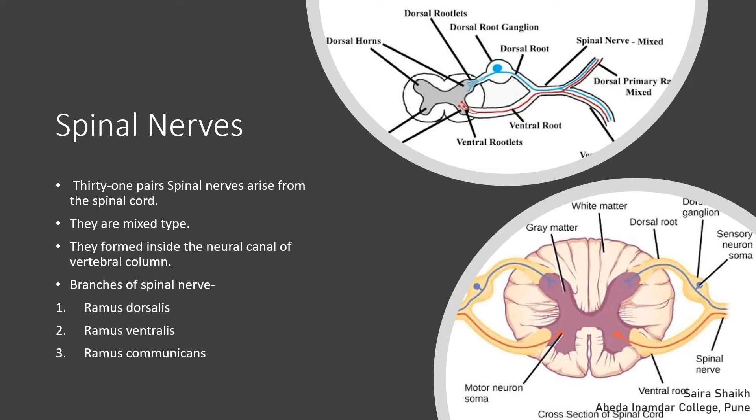Ramus dorsalis innervates the dorsal side of skin and muscles. Ramus ventralis is the long branch, innervating the organs and muscles of the lateral and ventral side. Ramus communicans is the smallest branch, running from the first thoracic vertebra to the third lumbar vertebra, and it joins two sympathetic ganglia.